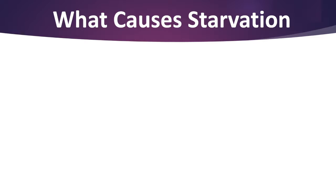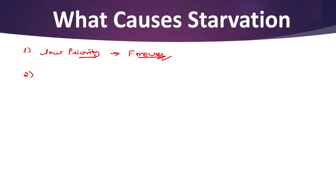What causes starvation? First, a process with low priority might wait forever if a process with higher priority uses the processor constantly. Second, low priority processes not directly interacting with resources can cause a situation that may lead to deadlock.